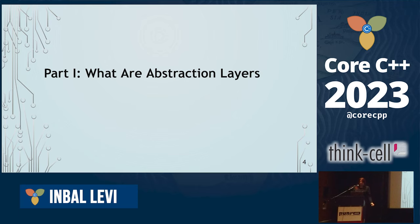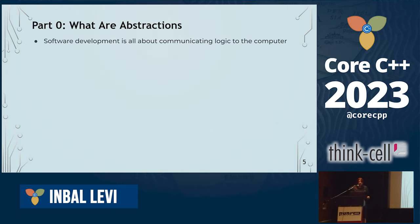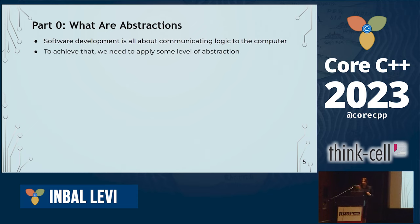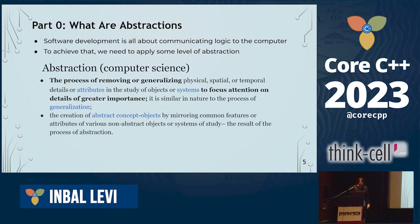Let's start with definition — what are abstraction layers? I think we all agree that software development is all about communicating logic to the computer. We want to make sure that we say the right things so the computer understands us and does the right thing to minimize the amount of bugs. To do that, we need to apply some level of abstractions. That's the exact point of not using assembly to write your code.